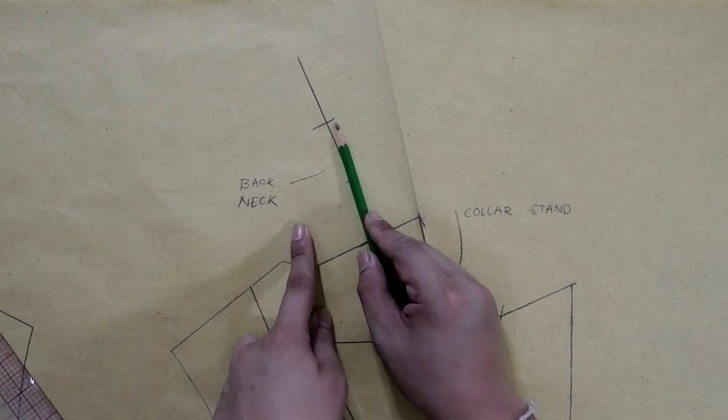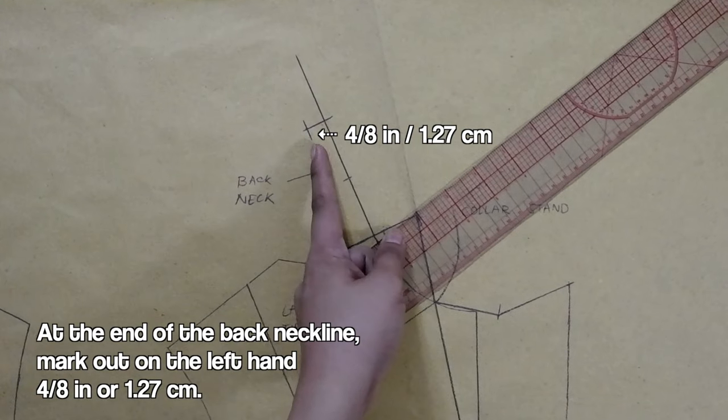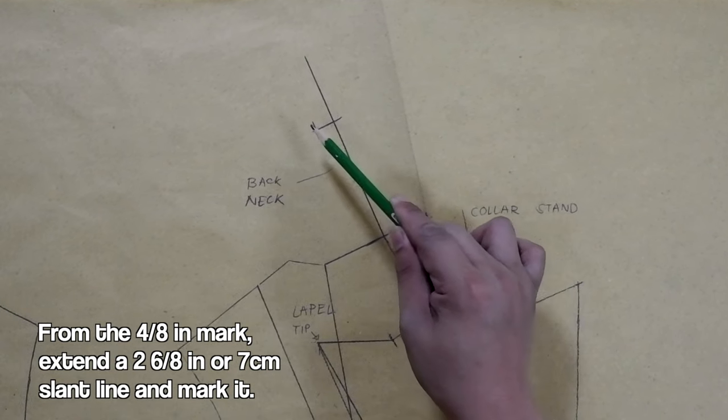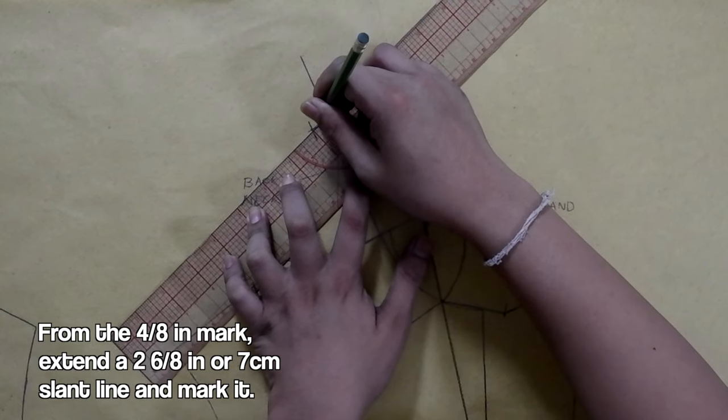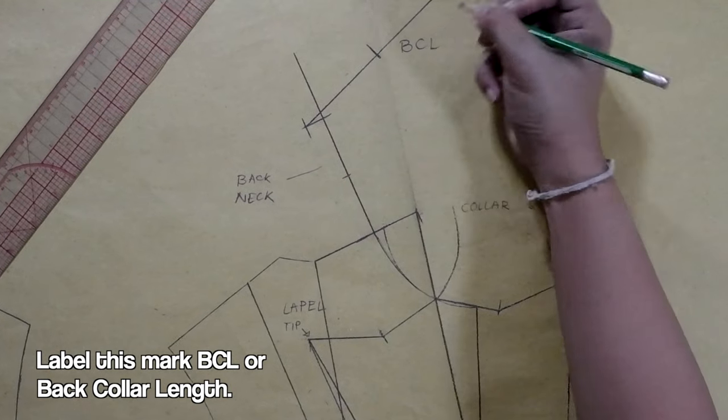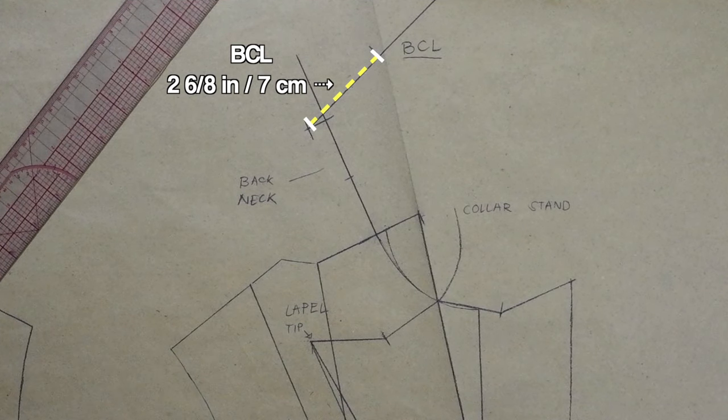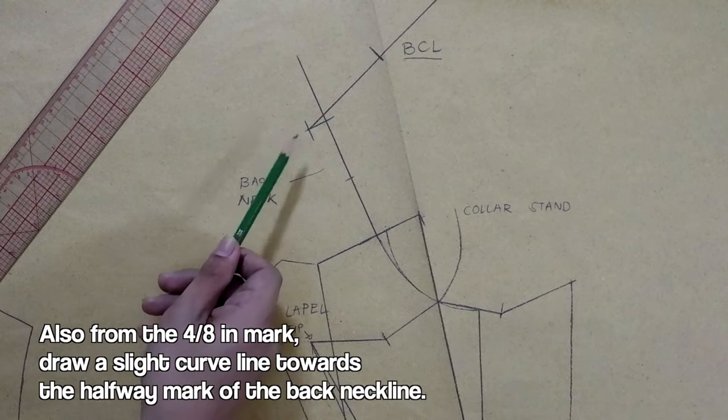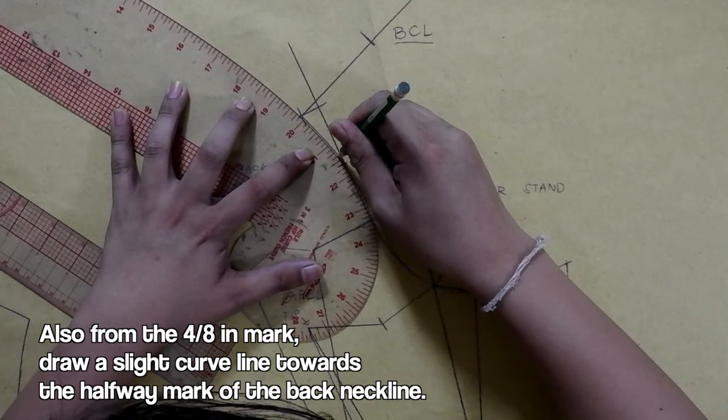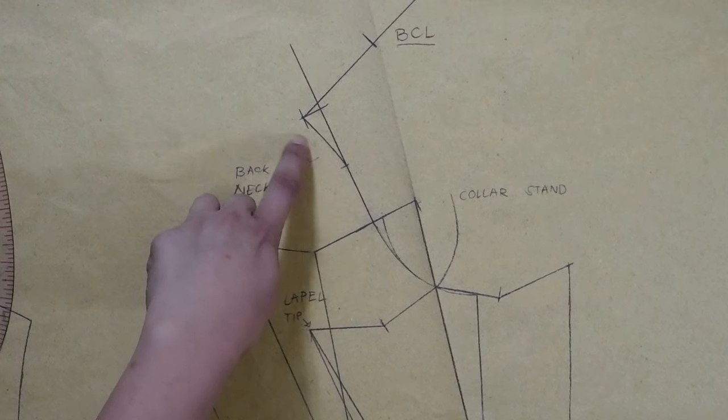So, at the end of the back neckline measurement, mark out on the left hand 4/8 of an inch or 1.27 centimeters. Next, from the 4/8 mark, extend a slant line with the measurement of 2 6/8 inches or 7 centimeters and mark it. Label this mark BCL, short for back collar length. And we will work on this later. Let's leave it behind like this first. Also, from the 4/8 mark, draw a slight curved line connecting to the halfway mark of the back neckline.